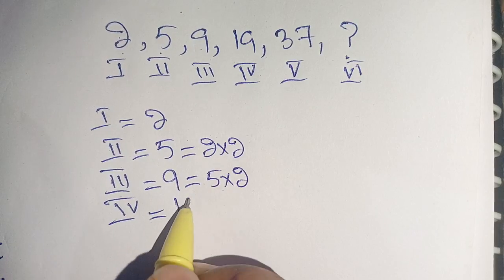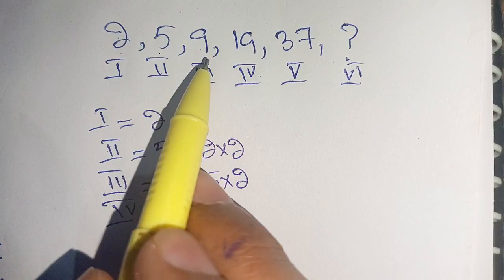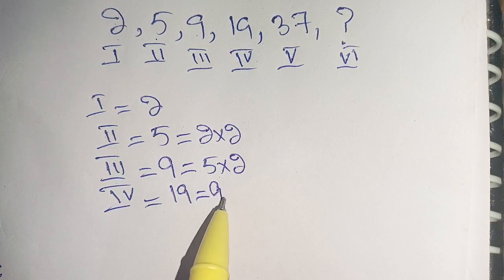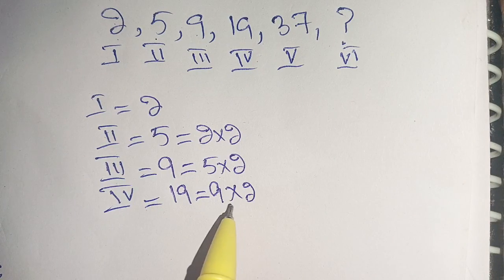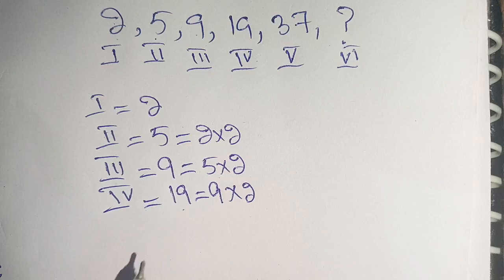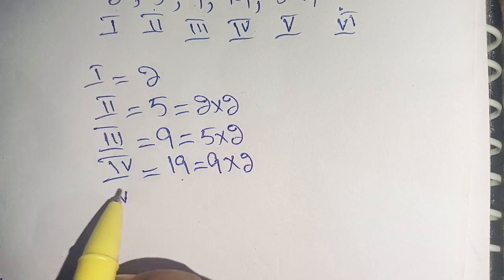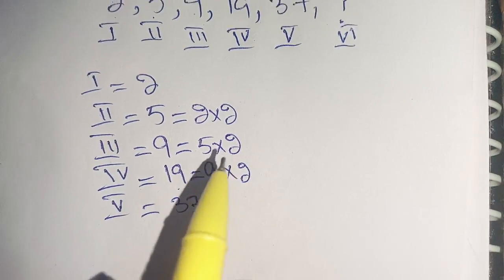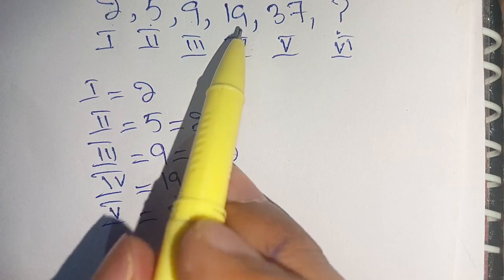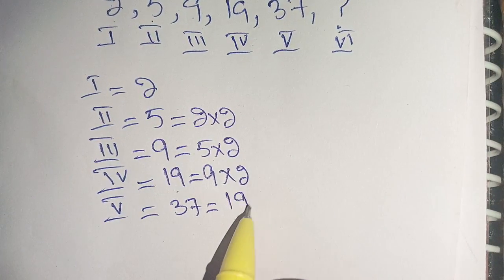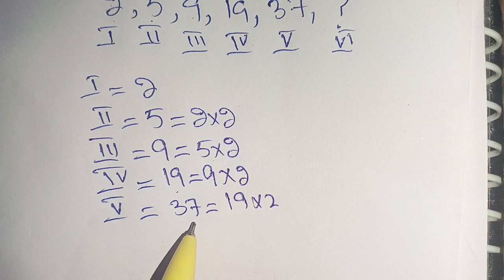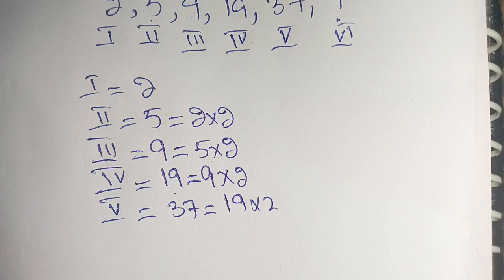The fourth term is 19. When we multiply the third term — 9 — by 2, it equals 18, which is nearest to 19. Now the fifth term is 37. When we multiply the fourth term — 19 — by 2, it equals 38, which is nearest to 37 but not equal to 37.